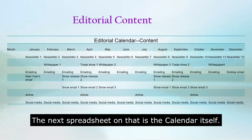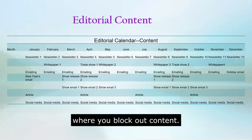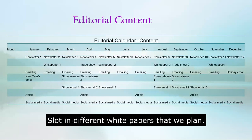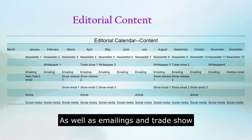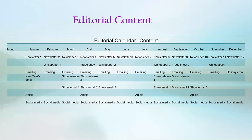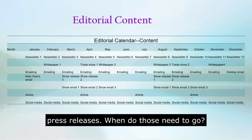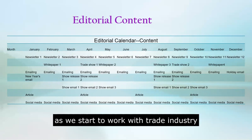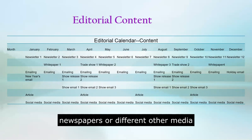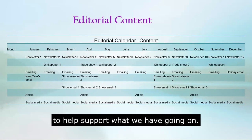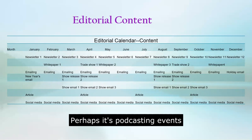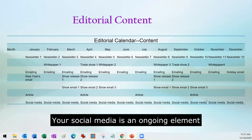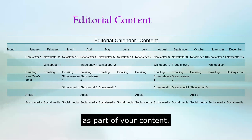The next spreadsheet is the calendar itself, where you block out: do we have a monthly newsletter? What would be the deadlines for that? And then slotting in the different white papers that we plan, the trade shows that we plan, our emailings, trade show press releases that we might need to do. When do those need to go? And then do we have articles planned as we start to work with trade industry newspapers or other media to help support what we have going on — whether it's podcasting events where you want to keep getting another guest host spot. Your social media would be an ongoing element as part of your content.